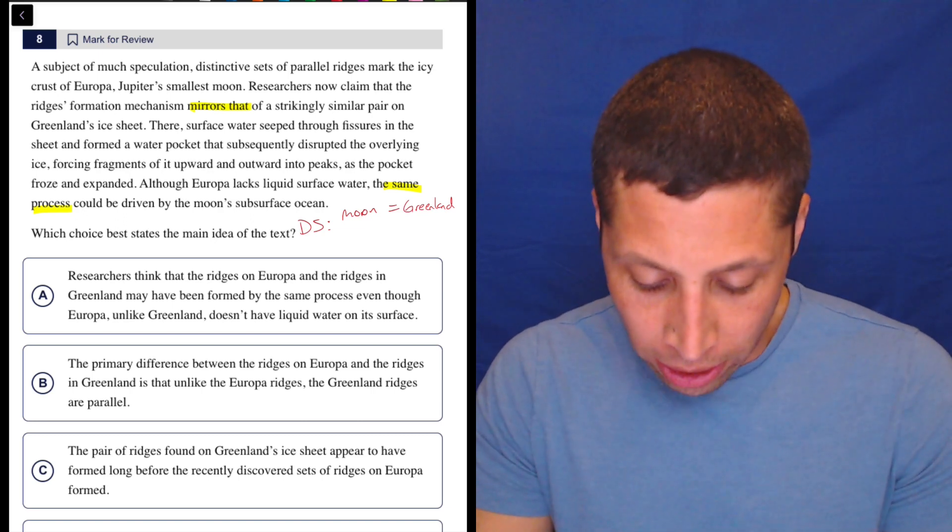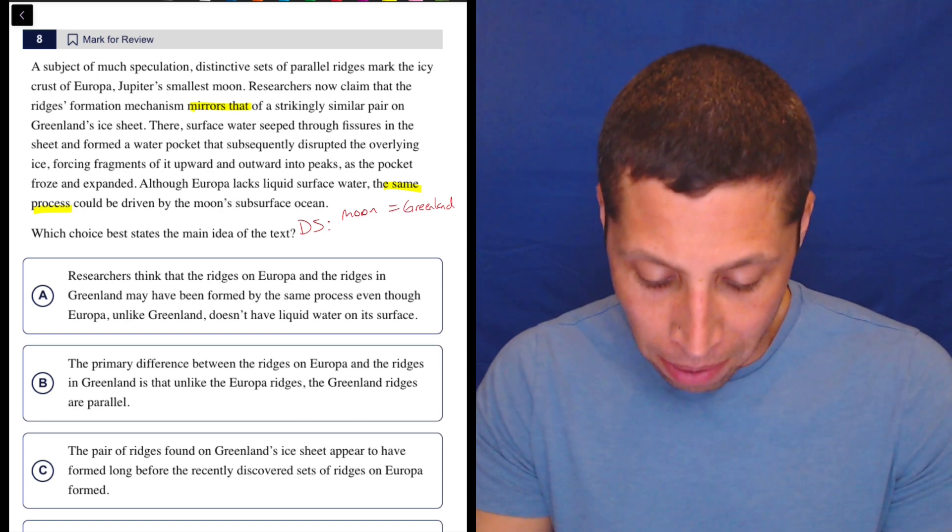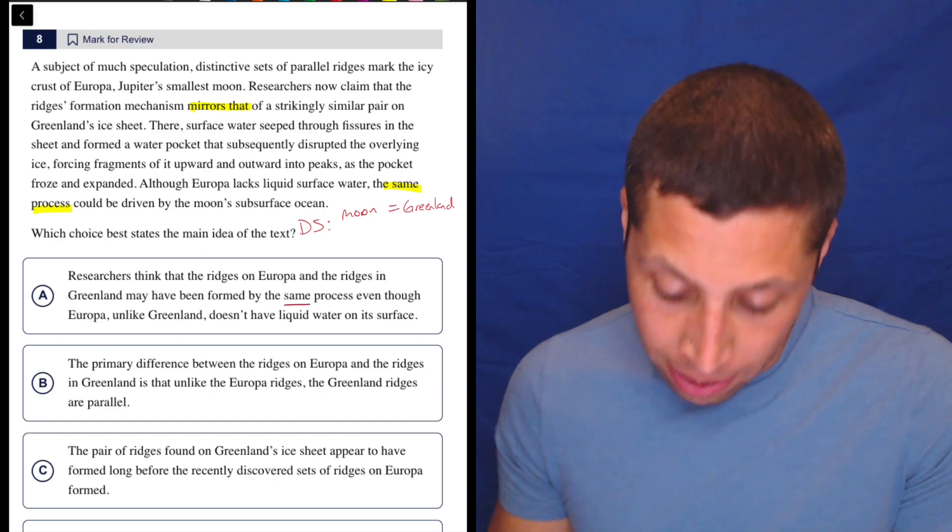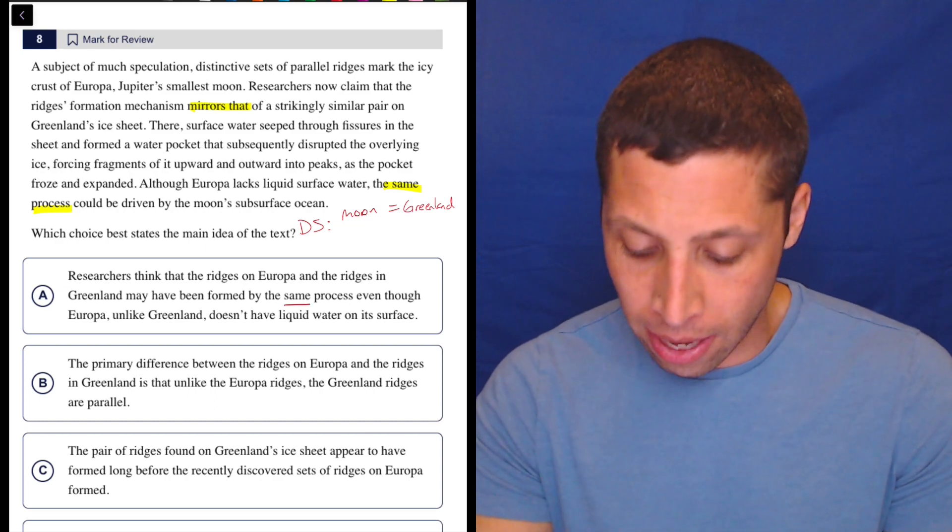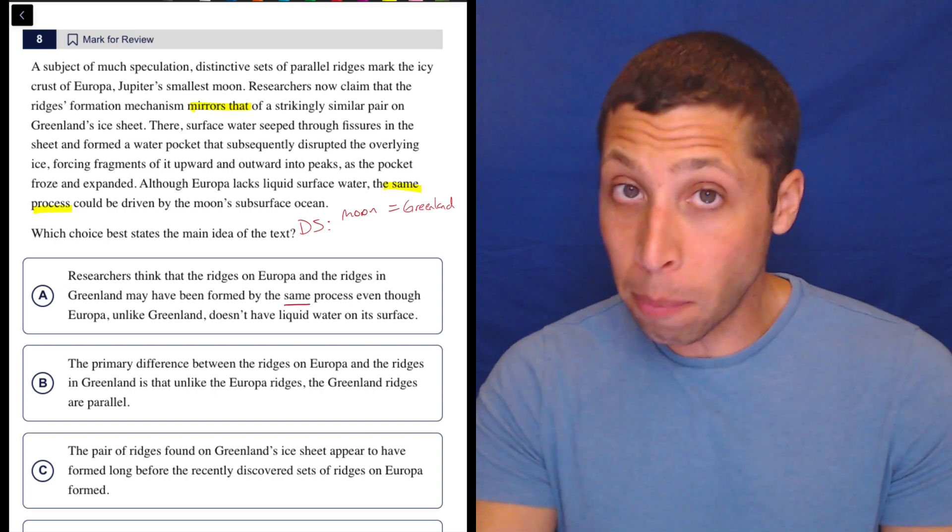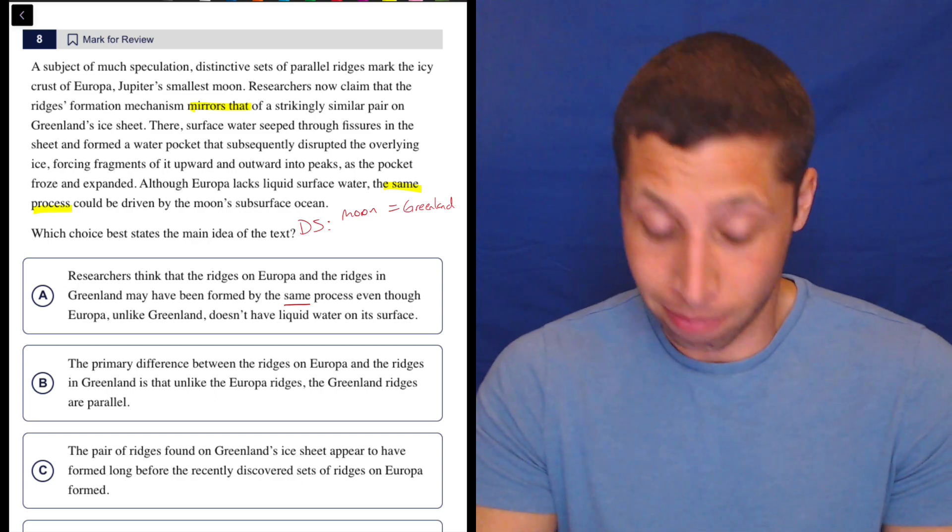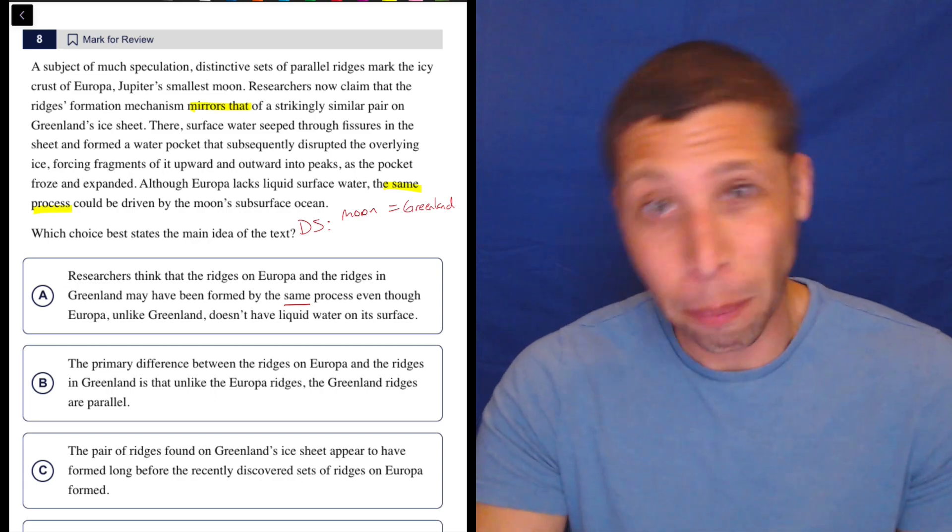Main idea of the text. A, researchers think the ridges of Europa and the ridges in Greenland may have been formed by the same process, even though Europa, unlike Greenland, doesn't have liquid water on its surface. So dumb summary-wise, seems good. Okay. This last part maybe is a problem, but I'm not going to worry about it yet. Let's look at B.